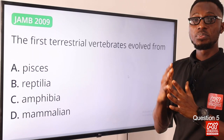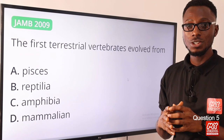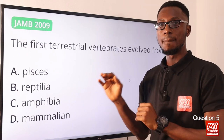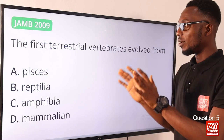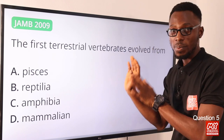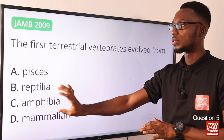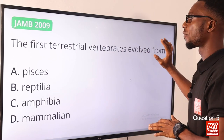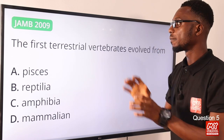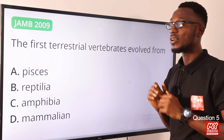Question five: the first terrestrial vertebrates evolved from what? Looking at the progressive evolutionary change, we go from pisces (fish) to amphibians, then reptiles, birds, and mammals. The first terrestrial vertebrates are actually the amphibians, and they evolved from the pisces — the fishes. So option A is the correct option.